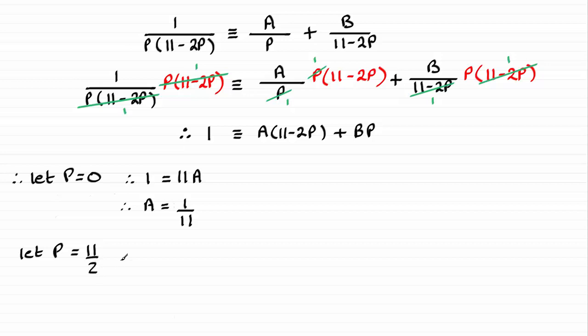Then what we have is the one on the left, again, is equal to, this bracket goes to zero, and we have B times 11 over 2.